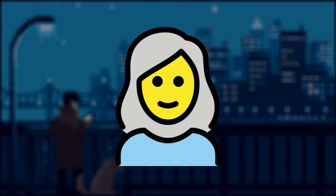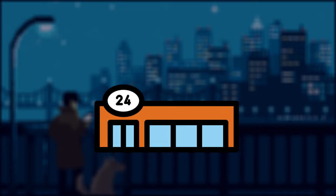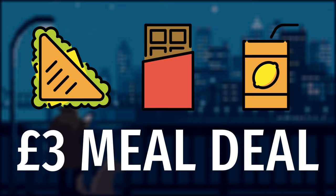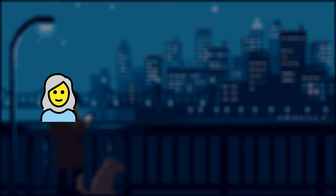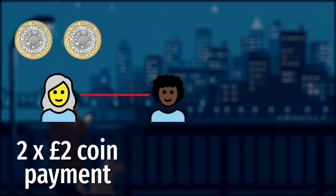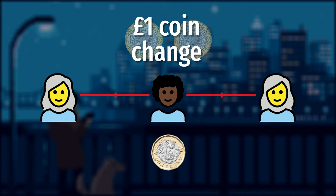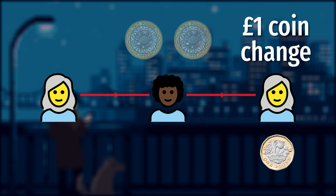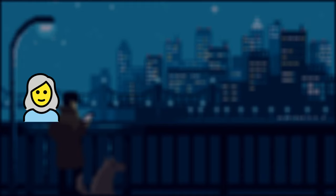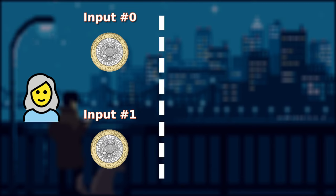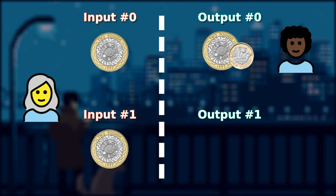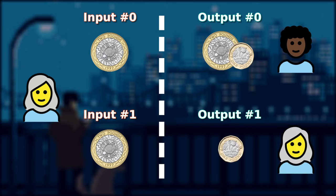Before we begin, let's go back to our favorite analogy with Alice going to the convenience store to buy her £3 meal deal. This time, Alice takes out two £2 coins, hands them over to the cashier, and the cashier gives £1 back to Alice as change. As a Bitcoin transaction, it will look something like this — on the input side, there will be two inputs of £2 each, and on the output side, £3 to the cashier and £1 back to Alice.